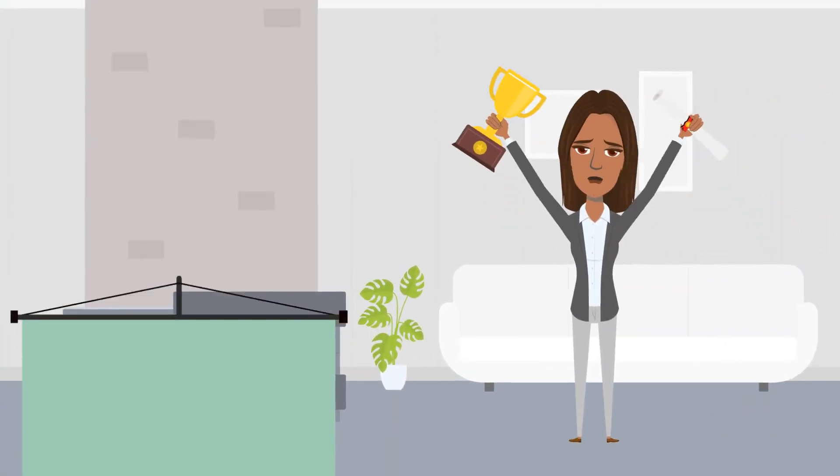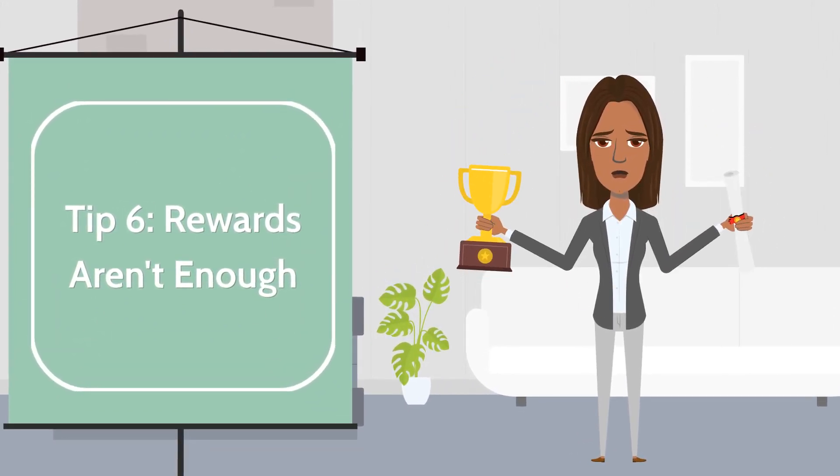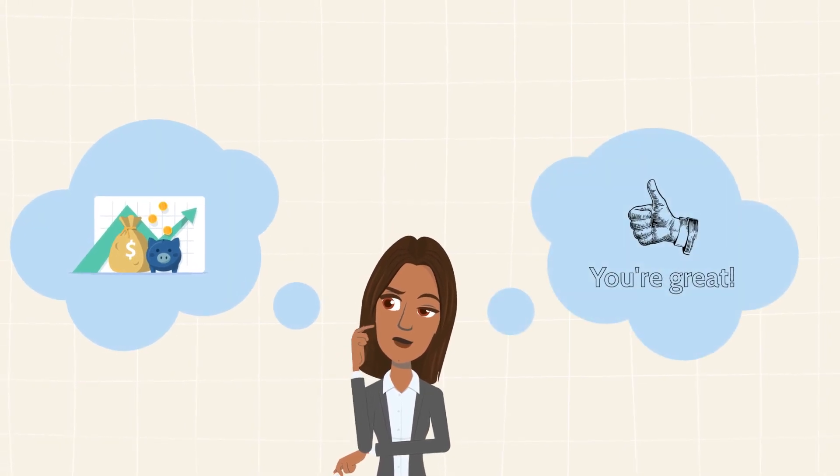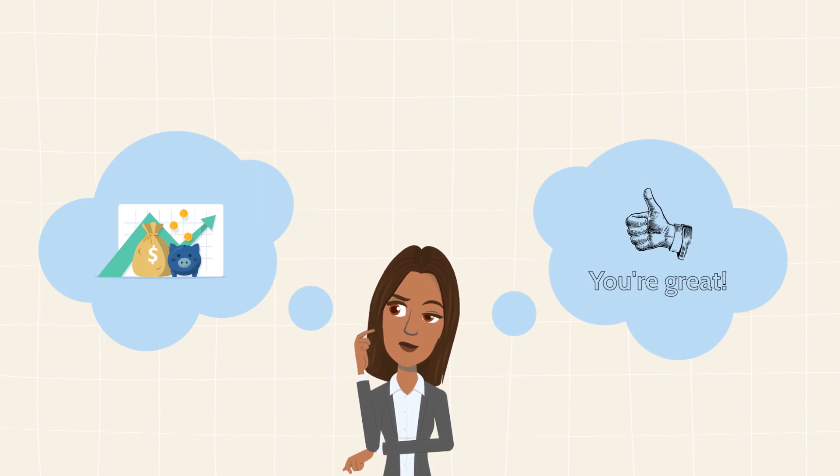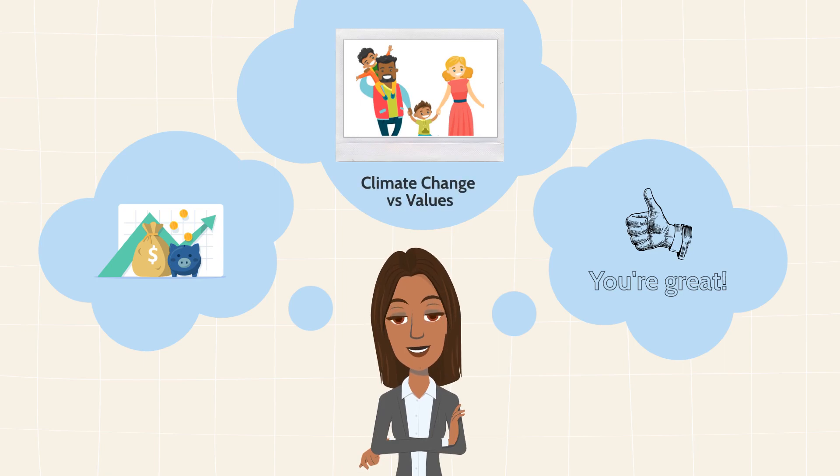Tip 6: Rewards aren't enough. Rewards, such as money or praise, can motivate action, but action may stop if the reward disappears. Longer-lasting motivation happens when people see change fitting with their values.